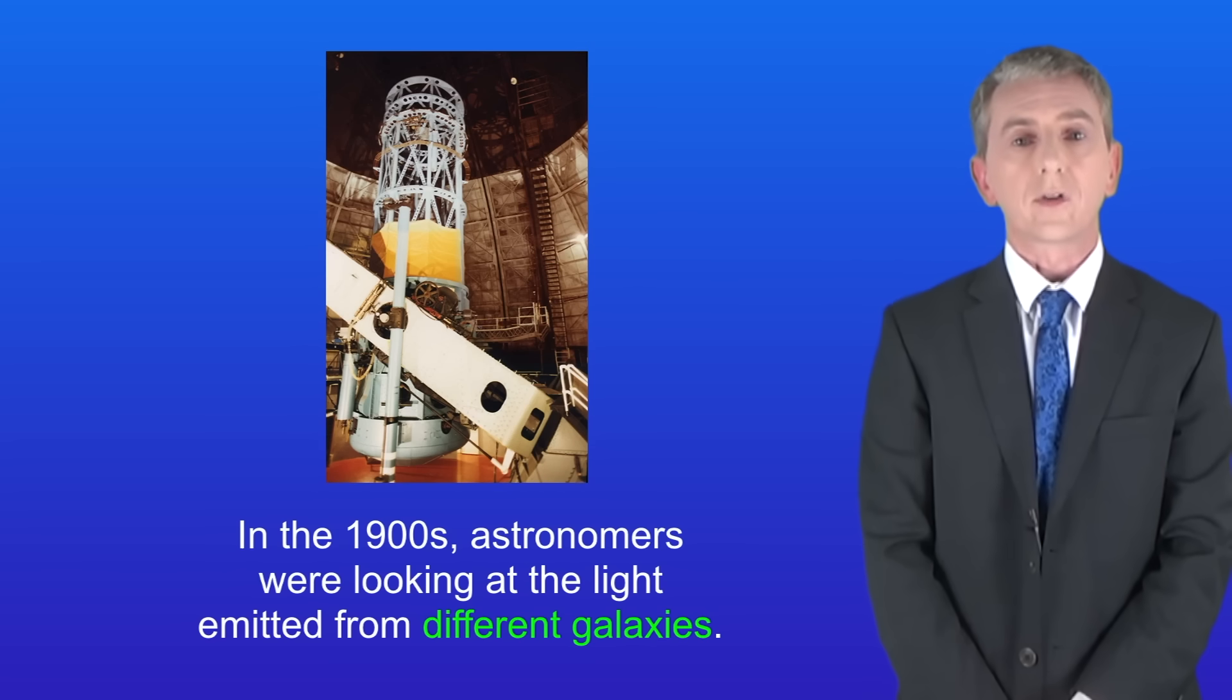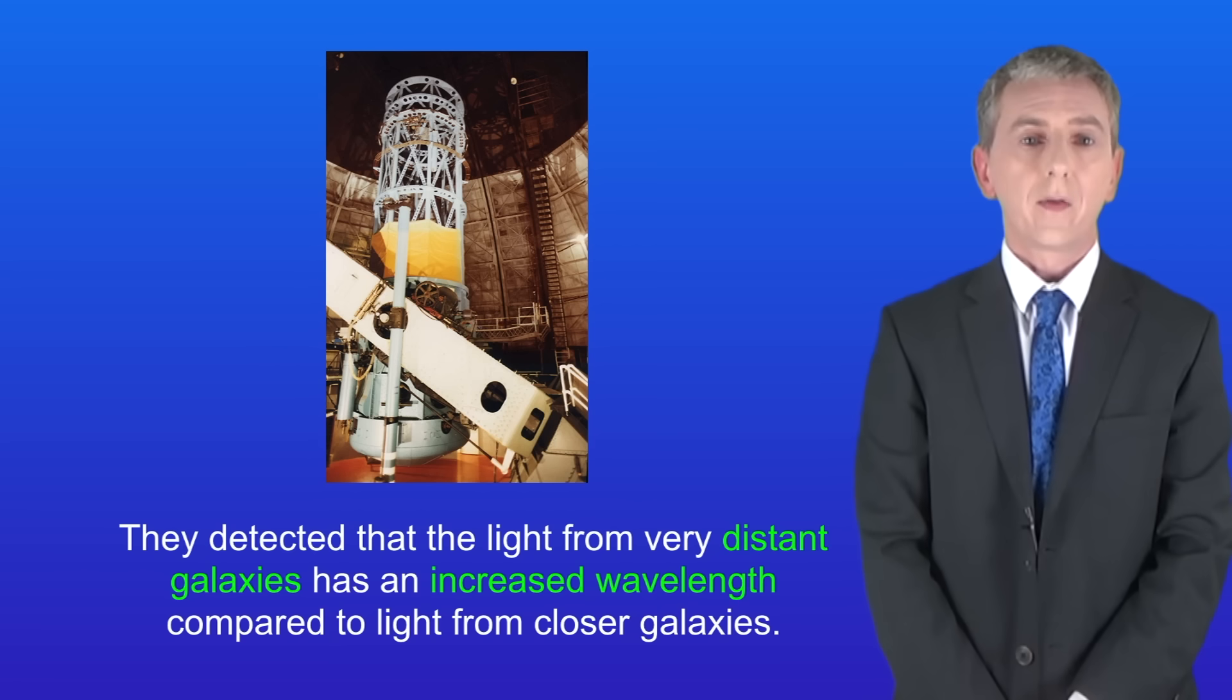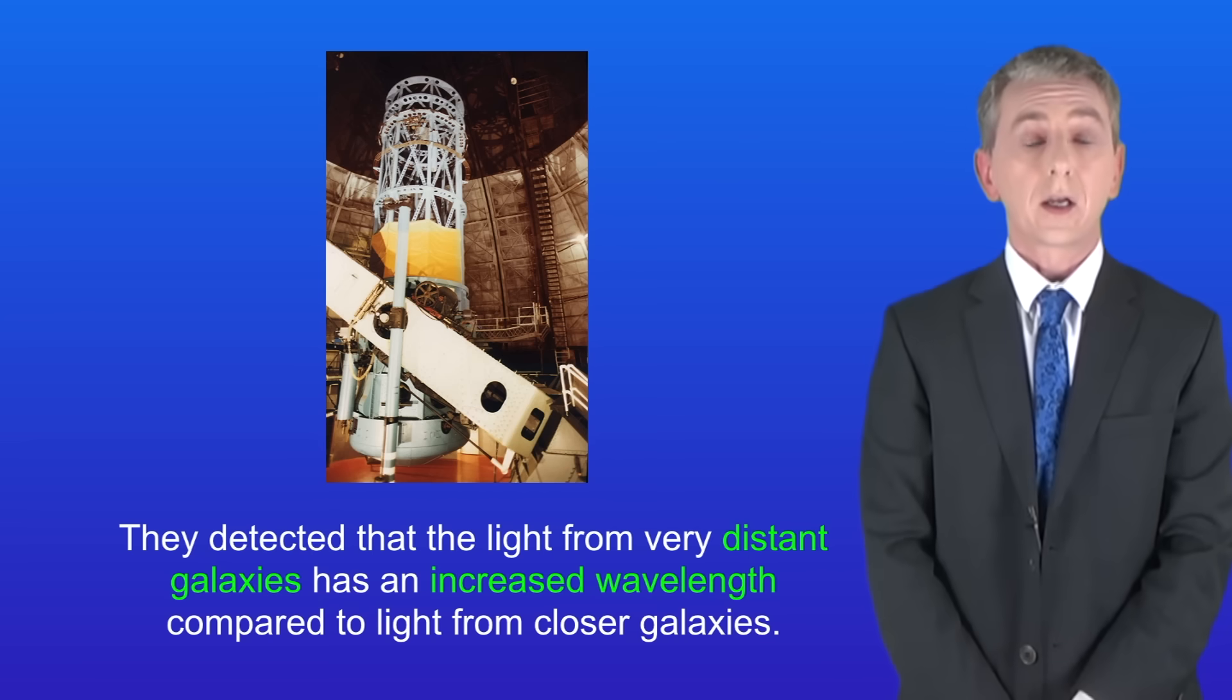In the 1900s astronomers were looking at the light emitted from different galaxies. They detected that the light from very distant galaxies has an increased wavelength compared to light from closer galaxies.